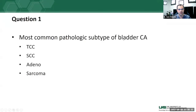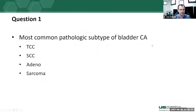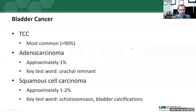There will be a few questions logged here. The first: what is the most common pathologic subtype of bladder cancer — transitional cell, squamous cell, adenocarcinoma, or sarcoma? The answer is transitional cell or urothelial carcinoma, which accounts for more than 90% of bladder cancers. So if you're guessing the pathology of a bladder cancer, transitional cell or urothelial is statistically the most common and a good choice.